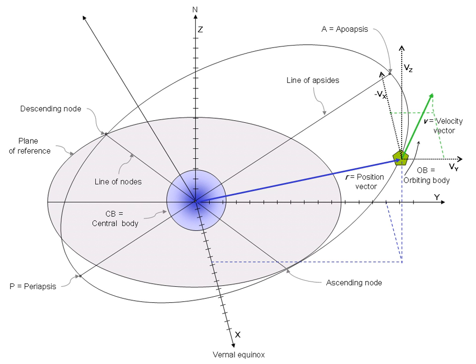The origin is Earth's center of mass. The z-axis is coincident with Earth's rotational axis, positive northward. The x-y plane coincides with Earth's equatorial plane, with the plus-x-axis pointing toward the vernal equinox and the y-axis completing a right-handed set.